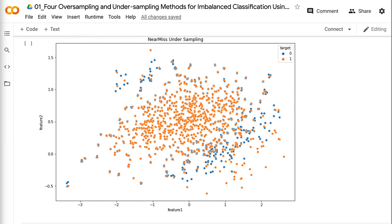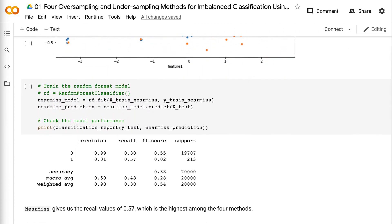Near-miss gives us the recall value of 0.57, which is the highest among the four methods.